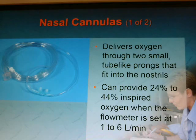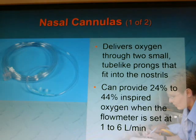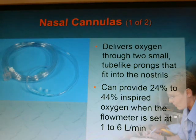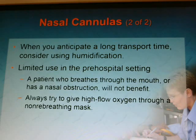Nasal cannula delivers oxygen through small tube-like prongs that fit into the nostrils. It can provide 24 to 44% inspired oxygen when the flow meter is set between 1 and 6 liters per minute. We breathe approximately 21% oxygen in room air. For every liter you increase on the nasal cannula, you're increasing oxygen by about 3 to 4%, depending on the source. When anticipating long transport times, consider using humidification. A patient who breathes through the mouth or has nasal obstruction will not benefit from a nasal cannula.